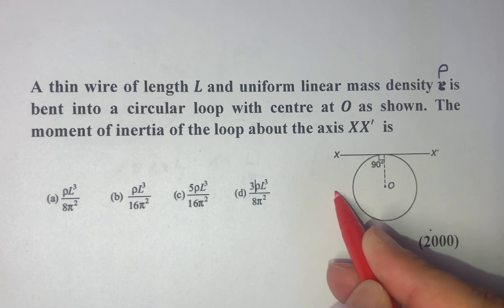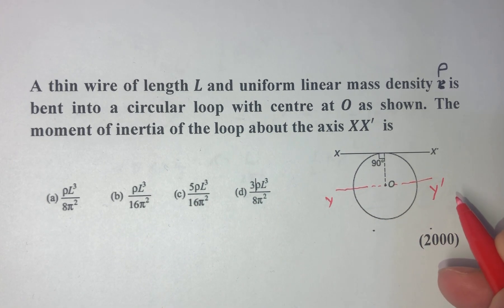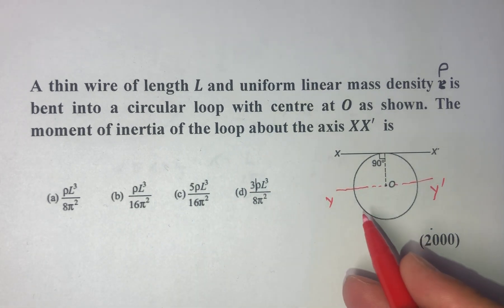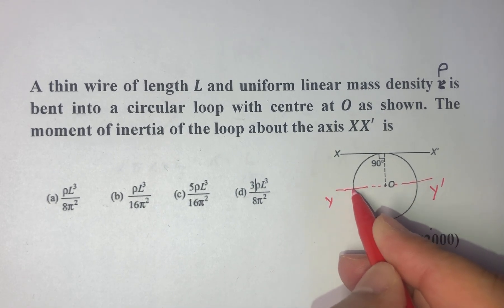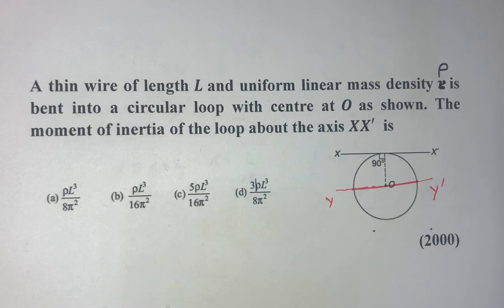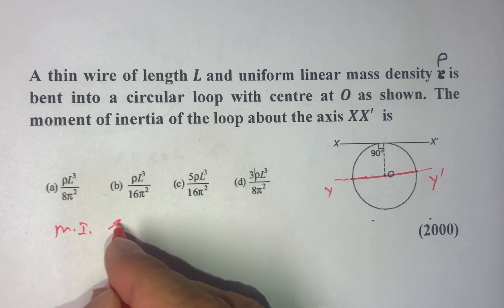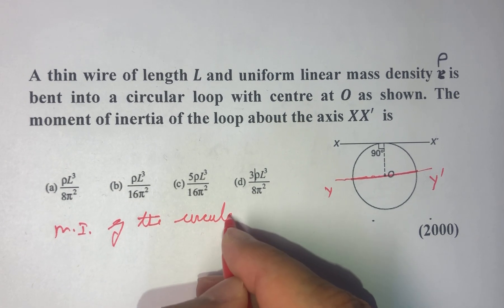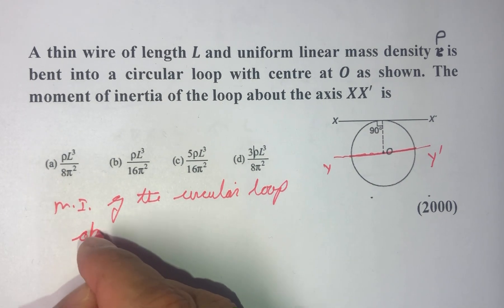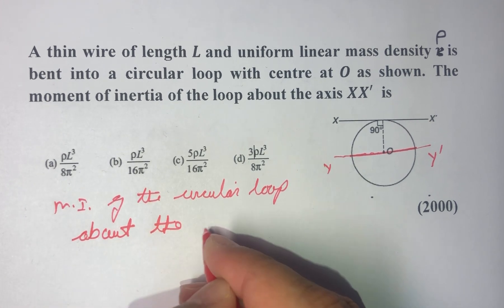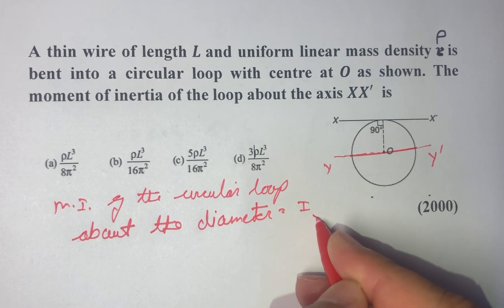Let us draw the axis which passes through the center and call this as y-y'. We know that the moment of inertia of a circular loop along the diameter — so this is basically nothing but a diameter — let us suppose it is given as I_yy'.